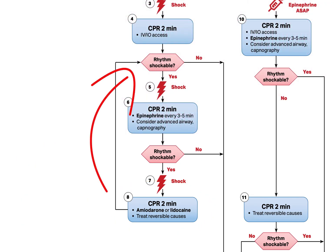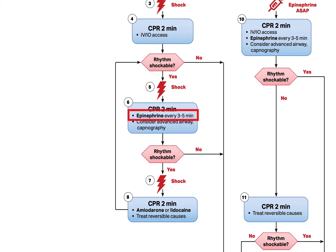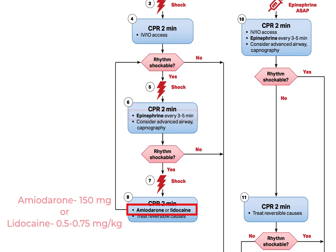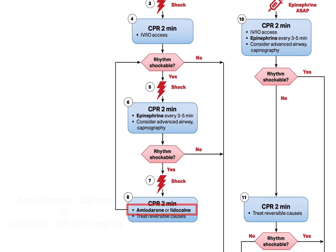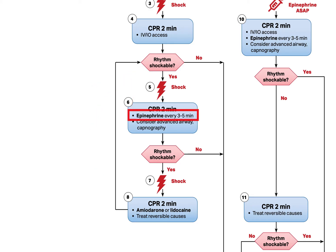At the end of the cycle, we assess again, shock if indicated, and repeat our epinephrine in the next cycle. In the following cycle, we will give our second and final dose of our antidysrhythmic drug — with either amiodarone or lidocaine, your second dose is half the initial amount. At this point, if our patient remains in a shockable rhythm, we continue our 2-minute cycles of CPR, and every other cycle we can give another dose of epinephrine. We continue this effort until the rhythm changes, until we get ROSC, or until a decision is made to terminate efforts.